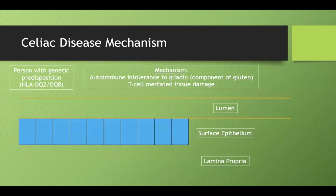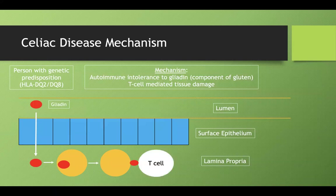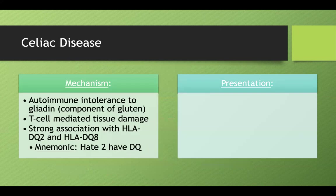When someone with this genetic predisposition consumes gliadin, it gets absorbed into cells, is presented like an antigen by antigen-presenting cells, and T cells recognize it as a foreign dangerous material. They release cytokines and attack the intestinal mucosa, thinking they've encountered a dangerous pathogen when in reality it's just gliadin. This can present in several ways.